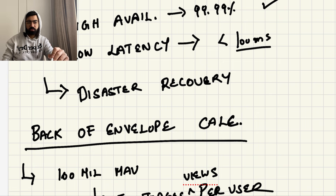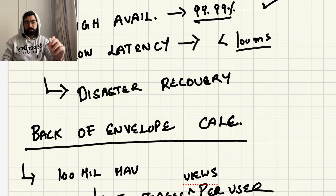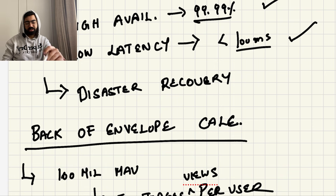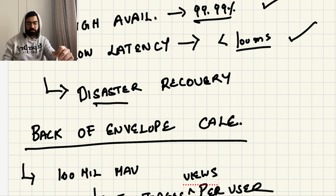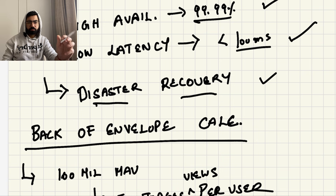Now talking about the non-functional requirements: our service should be highly available — at least four nines of availability. It should have low latency — images fetched in less than 100 milliseconds. And disaster recovery — if the service goes down, we should be able to bring it back up and recover.